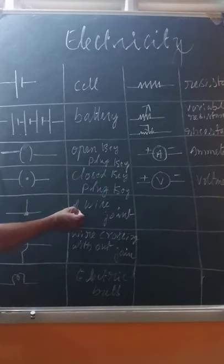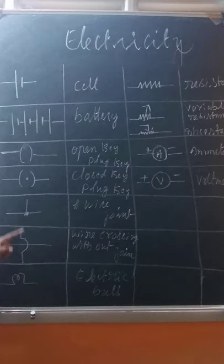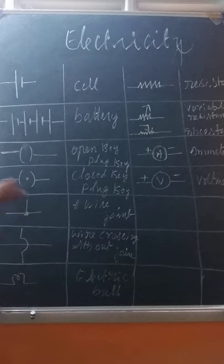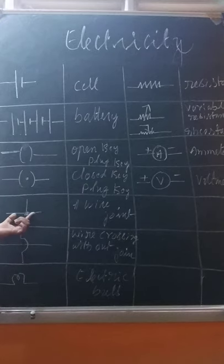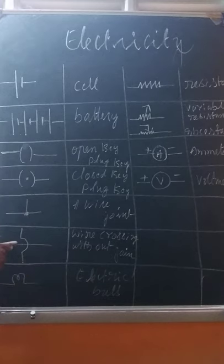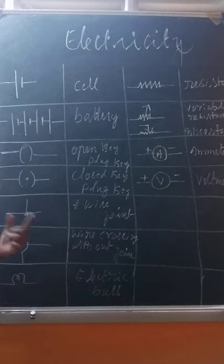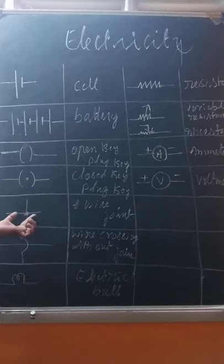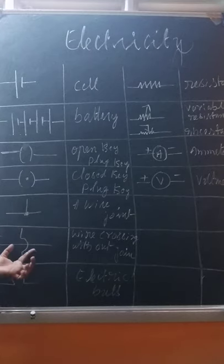This is called a wire joint. Here one wire is connected to another — they are joined together. But the other symbol shows wire crossing: one wire goes this way and another wire crosses it without connecting. This is called wire crossing — there is insulation, just crossing. The joint means they are soldered and connected; the crossing means they are not connected.